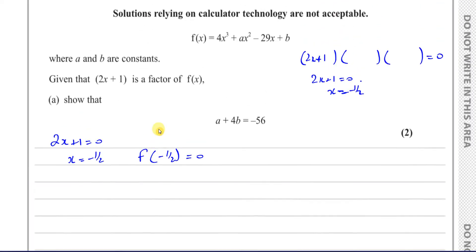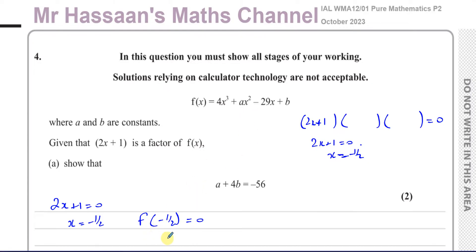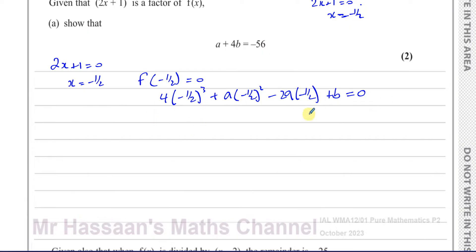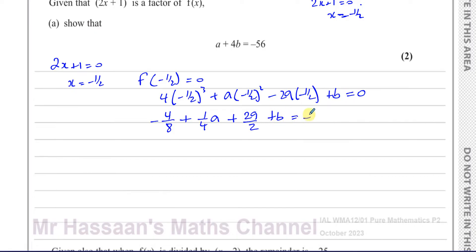Replacing x with -1/2 in the expression: 4 × (-1/2)³ + a × (-1/2)² - 29 × (-1/2) + b = 0. When you cube a negative number it stays negative, so -1/2 cubed is -1/8, giving -4/8. A negative number squared becomes positive, so (-1/2)² = 1/4, giving +a/4. Then -29 × -1/2 is positive 29/2. So we have -1/2 + a/4 + 29/2 + b = 0.